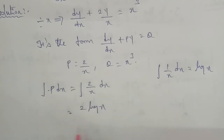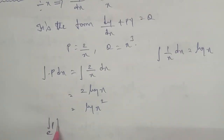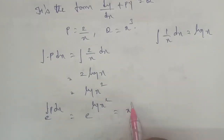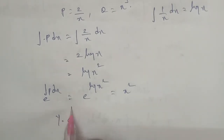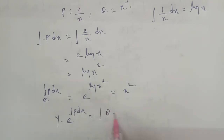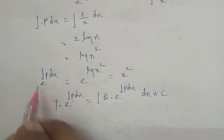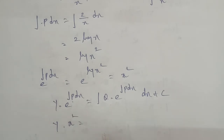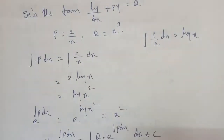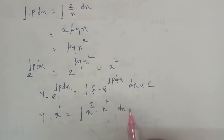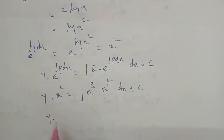So applying the log power rule, 2 log x equals log x squared. Next formula: e power of integral p dx equals e power log x squared, so e power log removes, leaving the integrating factor as x squared. The formula is y into e power integral p dx equals integral q into e power integral p dx dx plus c. So y into x squared equals integral of x power cube into x squared dx plus c.